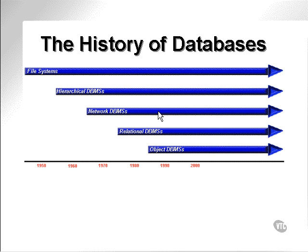The mid-80s saw the advent of the object database. An object database is very different to a relational database because it stores everything based on a globally identifiable object number or address, whereas a relational database stores things based on groupings of how they relate to each other. Let's not get into that too much at this stage.